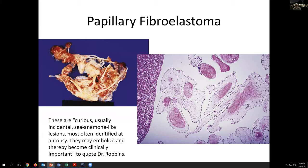Papillary fibroelastoma, as described by Dr. Robbins, are curious usually incidental sea-anemone-like lesions, with little fibrous cores surrounded by loose myxopapillary tissue and elastic tissue elements. Other rare primary cardiac tumors include inflammatory myofibroblastic tumor, paraganglioma, hemangiomas, granular cell tumors, neural tumors, ganglioneuroma, and teratomas — all described in case-example type lesions.